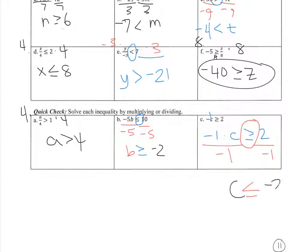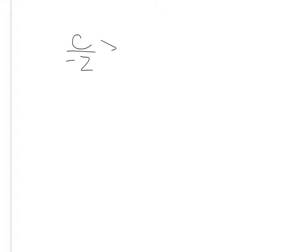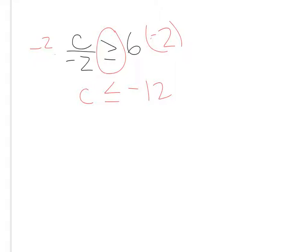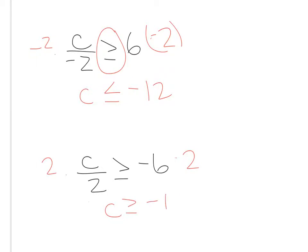2 divided by negative 1 is negative 2. So the rule is: if you multiply or divide by a negative number, then you have to switch the inequality. For example, c divided by negative 2 — you're going to multiply both sides by negative 2, which means you switch the inequality. But if I had c divided by 2 greater than or equal to negative 6, I would multiply by a positive 2 and keep the inequality the same, because I'm not multiplying by a negative.